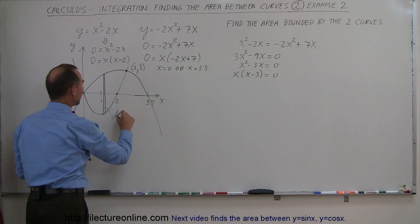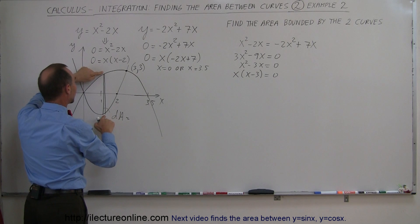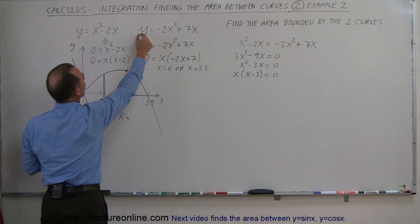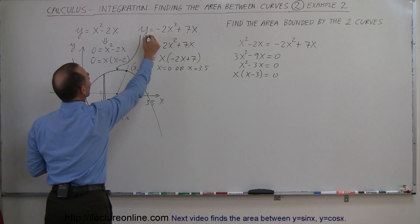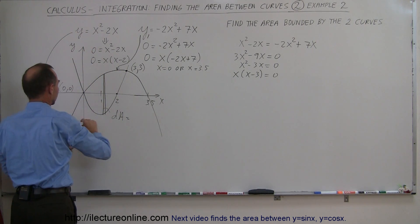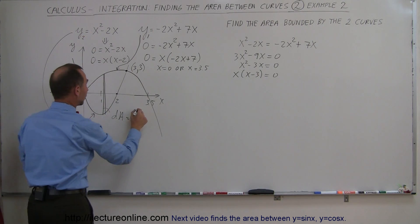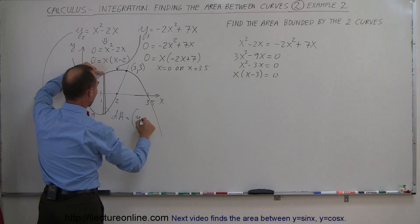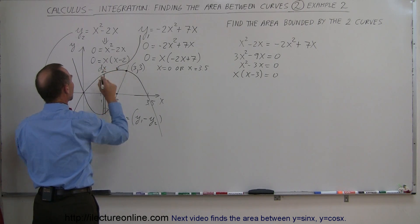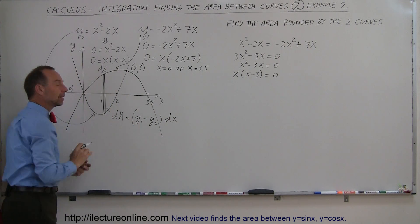So this little da equals the height of the rectangle, which is the upper curve minus the lower curve. The upper curve is the downward-opening parabola — call that y1. The bottom curve is the upward-opening parabola — call that y2. So da equals (y1 minus y2) times dx, where dx is the infinitesimal width of the rectangle.